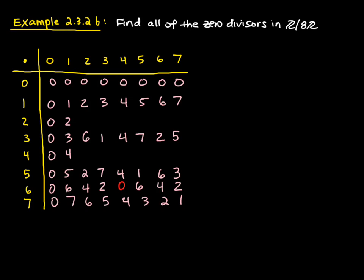We start with two times zero equals zero, two times one equals two. Then two times two equals four, two times three equals six. Two times four equals eight, but eight is zero mod eight, so we get a zero there.